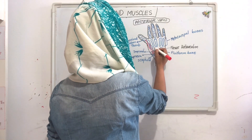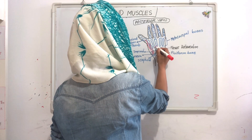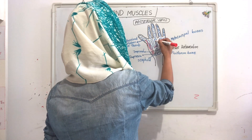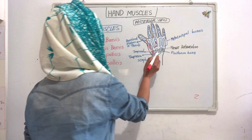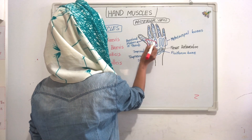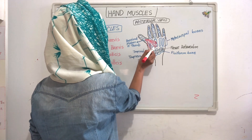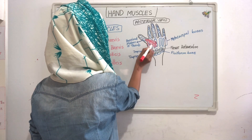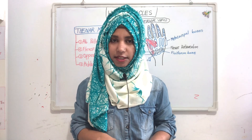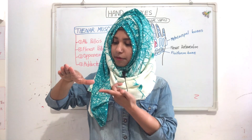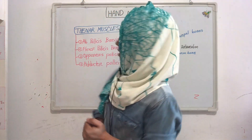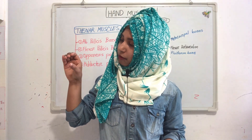Then our adductor pollicis. Its oblique head origin is from the base of the second and third metacarpal bone, and its transverse head originates from the shaft of the third metacarpal bone. Its insertion is into the proximal phalanx of the thumb. Now for actions: abductor pollicis brevis helps abduction of the thumb, adductor pollicis helps adduction of the thumb, flexor pollicis brevis helps flexion of the thumb, and opponens pollicis helps to pull the thumb forward and medially.